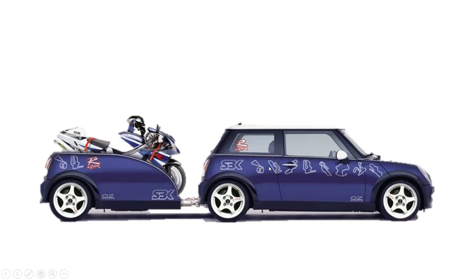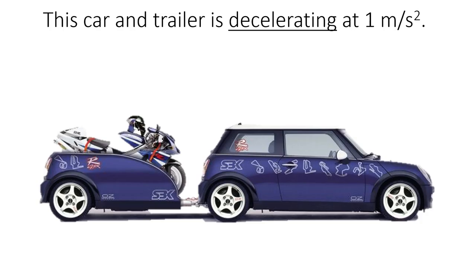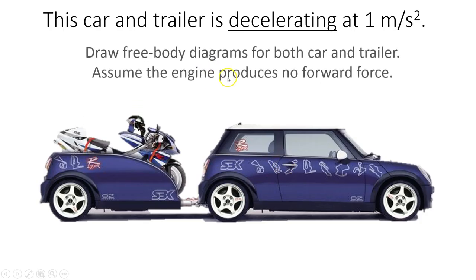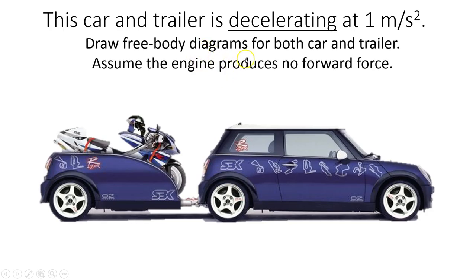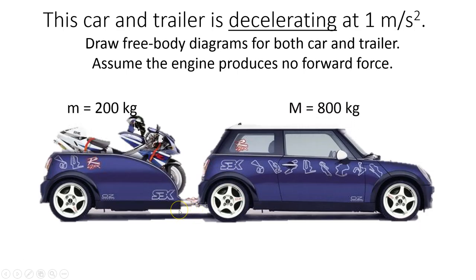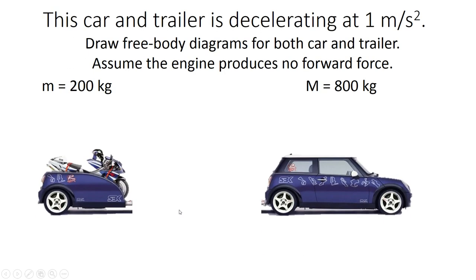So now it's your turn to have a go at an example. Imagine this car and trailer is decelerating at one meter per second squared. First of all, could you draw a free body diagram for both the car and the trailer? Separate them out into two parts. You can assume the engine produces no forwards force, so it's only backwards resistive forces that we're going to consider. But there is a tension in the tow bar between the two objects. I'll give you the masses of the two objects, which we'll use later. Pause it and do that now.